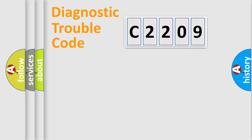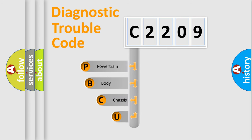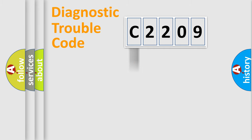Let's do this. First, let's look at the history of diagnostic fault code composition according to the OBD2 protocol, which is unified for all automakers since 2000. We divide the electric system of an automobile into four basic units: Powertrain, Body, Chassis, and Network.